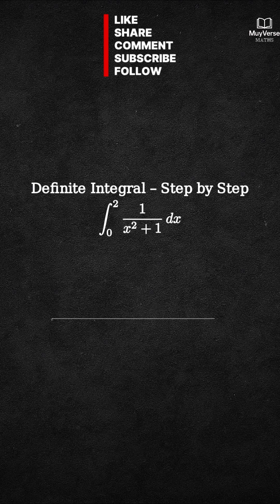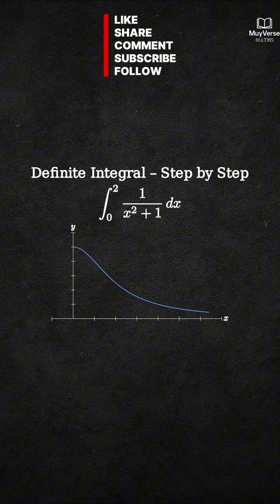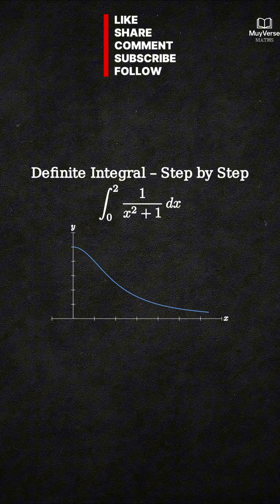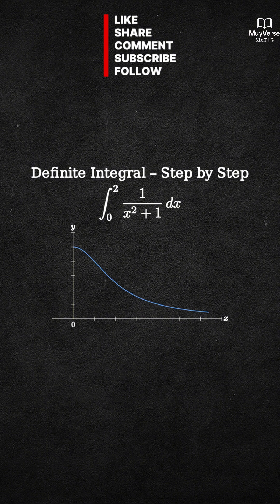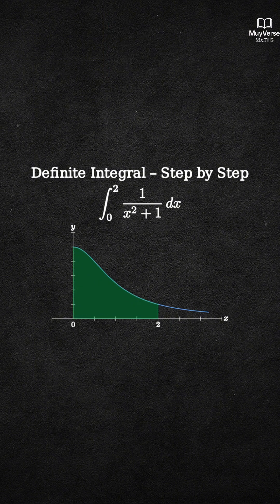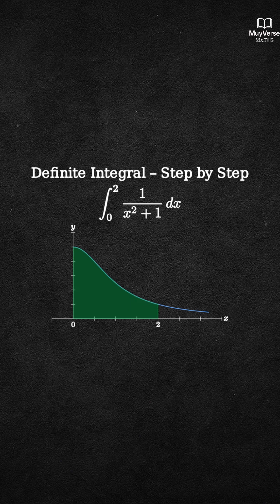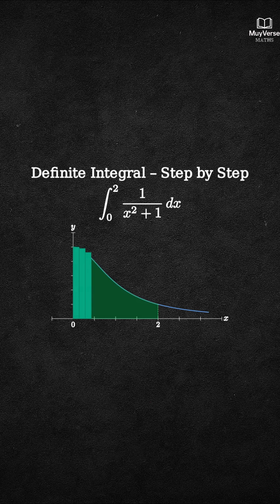First, the visual meaning. We draw axes and the curve y equals 1 over x squared plus 1. The definite integral from 0 to 2 is the area under this curve above the x-axis between x equals 0 and x equals 2. Think of the area as the limit of lots of thin rectangles that perfectly match the curve.